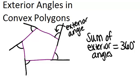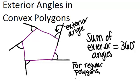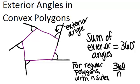Now if the polygon is a regular polygon, meaning that all of the sides and all of the angles are congruent, we can actually figure out how many degrees each exterior angle is by just taking 360 and dividing by the number of sides, which is the same as the number of exterior angles. So for regular polygons with n sides, 360 divided by n will be one exterior angle.